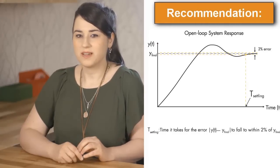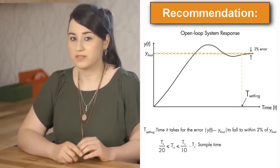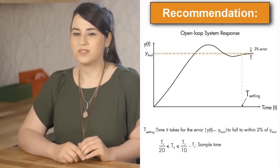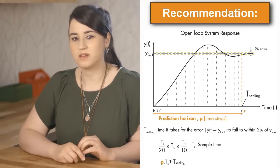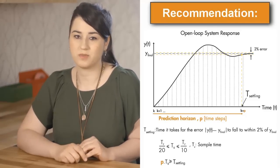Assuming the sample time is chosen based on what we've discussed before, the recommendation for choosing the prediction horizon is to have 20 to 30 samples covering the open-loop transient system response.